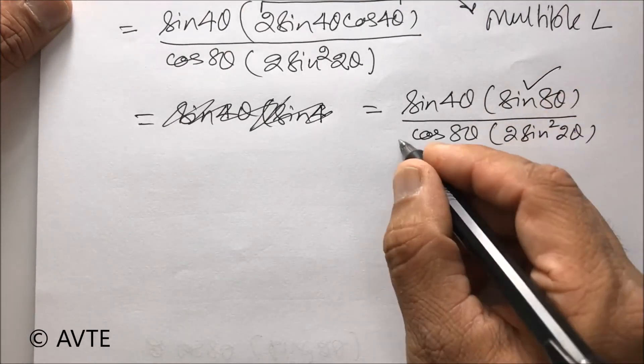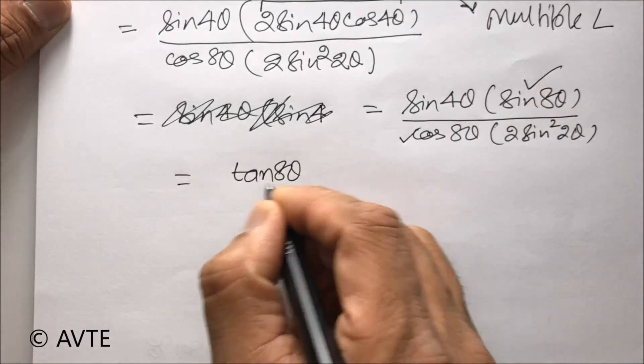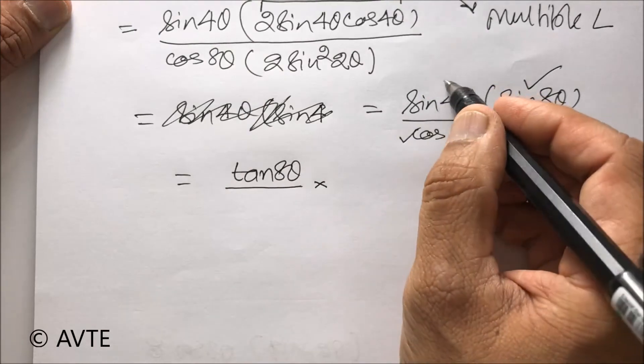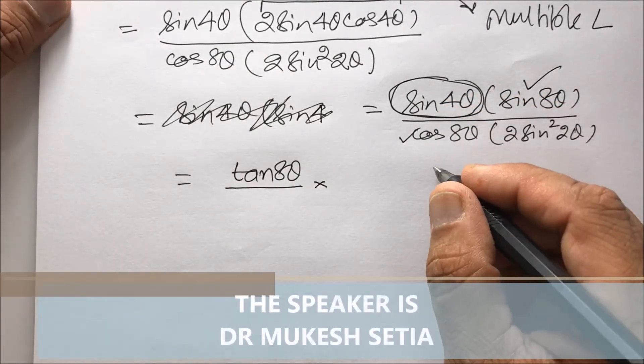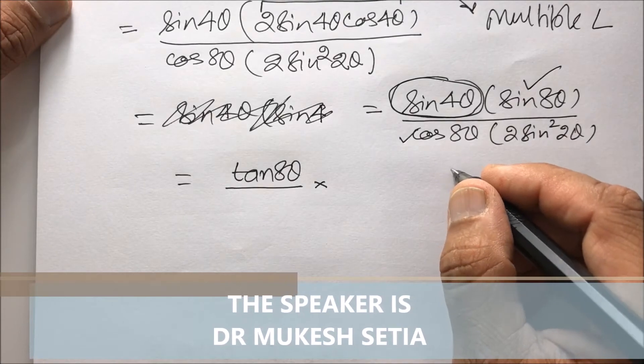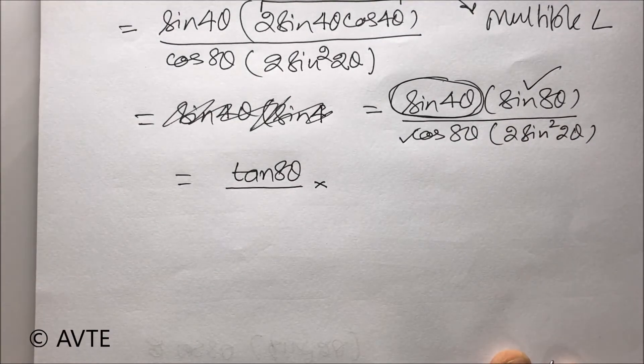Now, can you combine sine 8 theta with cos 8 theta? That is tan 8 theta. So, your numerator part is done. Now, what to do with this sine 4 theta? This sine 4 theta can be converted to half angle. But why? Just now, we have converted sine 4 theta using the multiple angle to sine 8 theta.